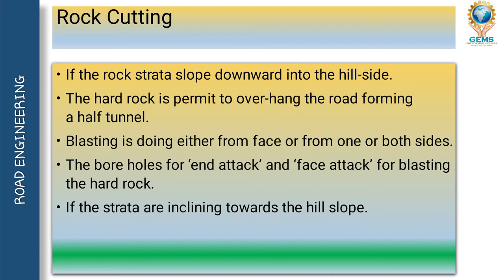First, let us see about rock cutting. If the rock strata slope downward into the hill side, the hard rock is permitted to overhang the road, forming a half tunnel. If it is in downward form, what we do is cut and allow overhanging. Blasting is done either from the face or from both sides. If that rock is in the middle of the road, we can blast it from both sides or from the face of that rock.